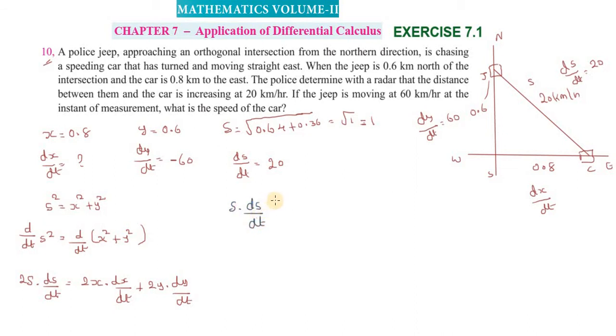This is the value of x · dx/dt. Remaining values on one side: x · dx/dt = s · ds/dt - y · dy/dt.